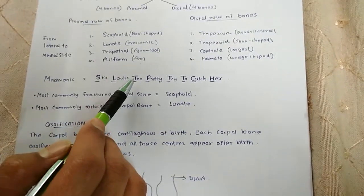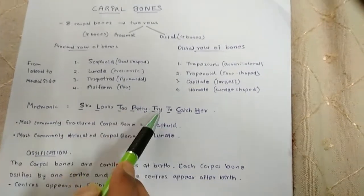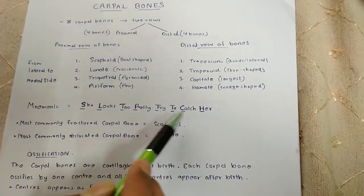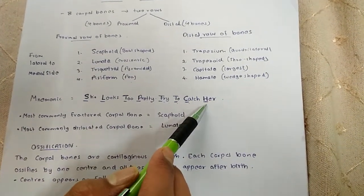Scaphoid, lunate, triquetral, pisiform, trapezium, trapezoid, capitate, hamate.